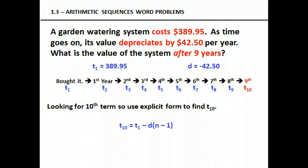Now I want you to do the same problem, but find the value of the system after 9 years. We do exactly the same thing, except that after 9 years, we will be looking for the 10th term. Therefore, we are looking for t sub 10. Pause now, plug in your information, and find the answer before you move on.